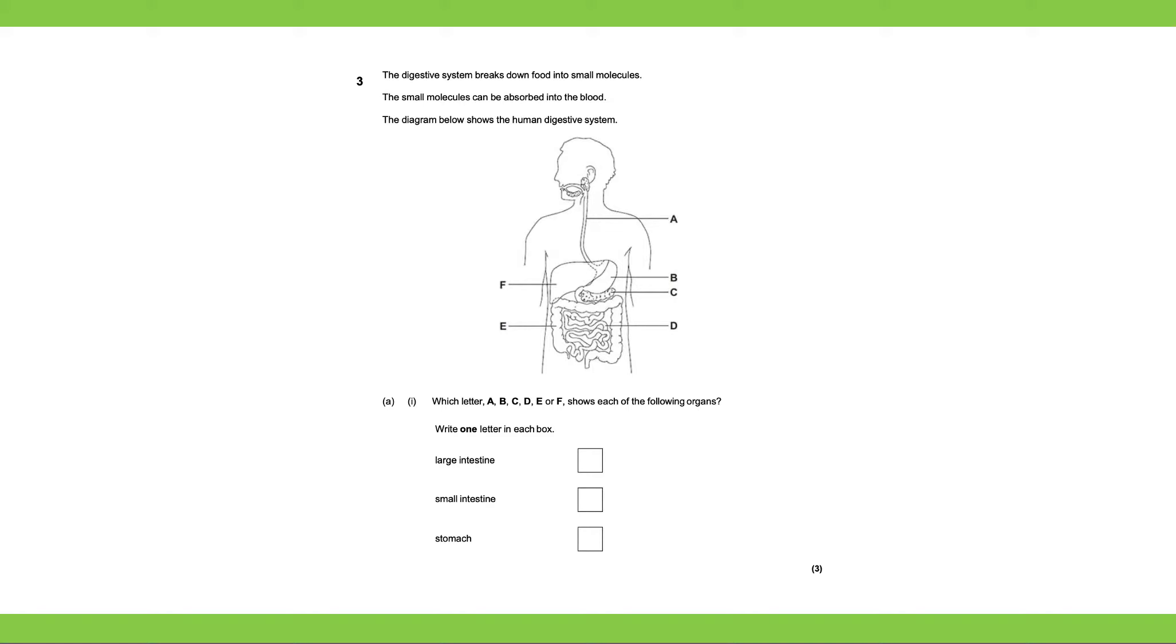Our first exam question states the digestive system breaks down food into small molecules. The small molecules can be absorbed into the blood. The diagram below shows the human digestive system. Write letter A, B, C, D, E, or F showing which of the following organs.